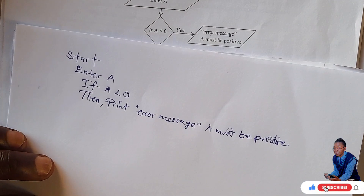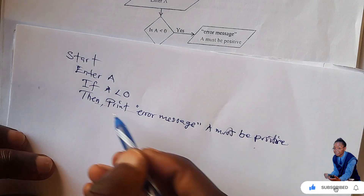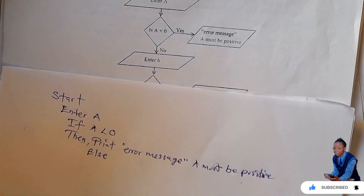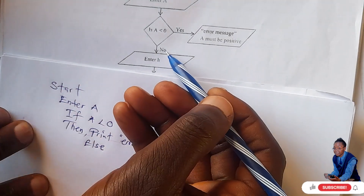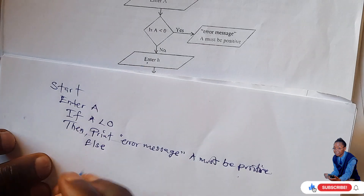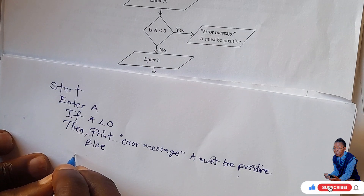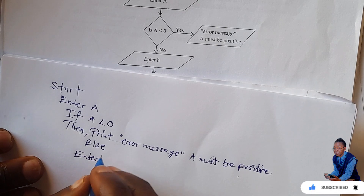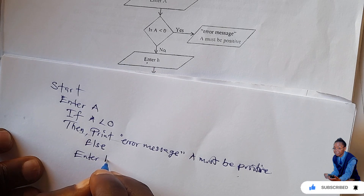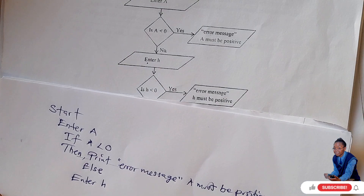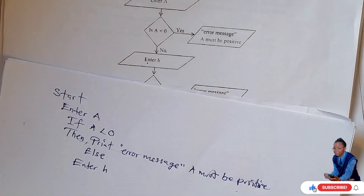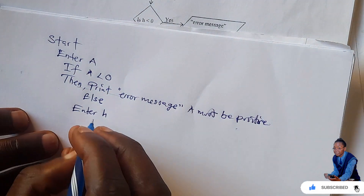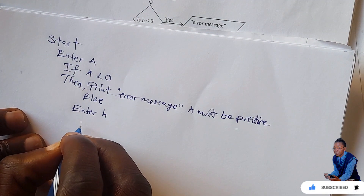Since you have two possible answers — yes and no — you say else. This is the no branch. So else, enter H. Then again you have a condition on H: is H less than zero? So just say if.